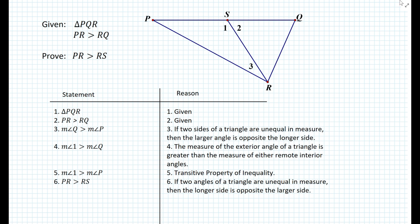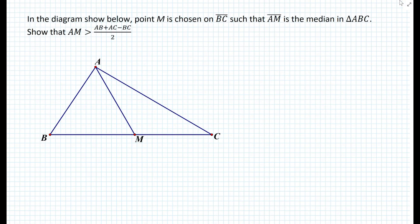Let's look at a final example. In the diagram shown below, point M is chosen on segment BC such that segment AM is the median of triangle ABC. We want to show that the length of segment AM must be greater than the quantity (AB plus AC minus BC) divided by 2. The best way to start this proof is to think about the triangle inequality theorem, beginning with triangle ABM.